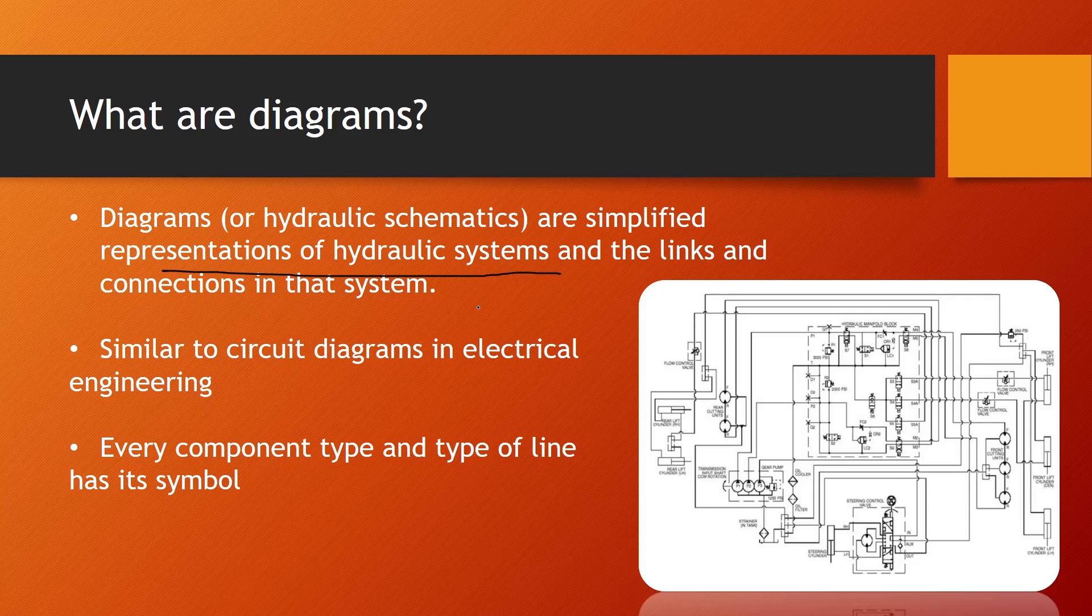Hydraulic systems on machines are systems that are not so easily located, and this is why we have to represent them in a simpler way. They are kind of similar to electric circuit diagrams. Every component and every component type and type of line has its own symbol in those hydraulic diagrams.